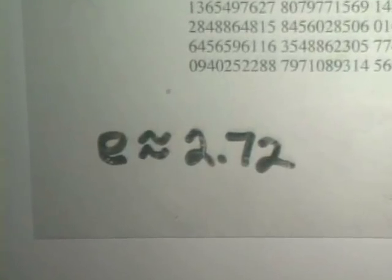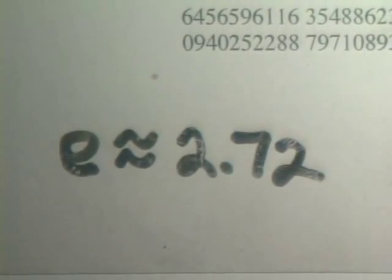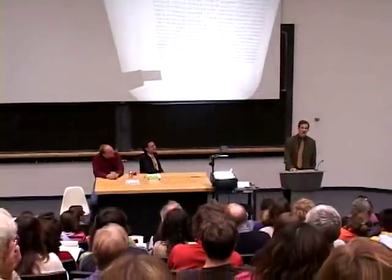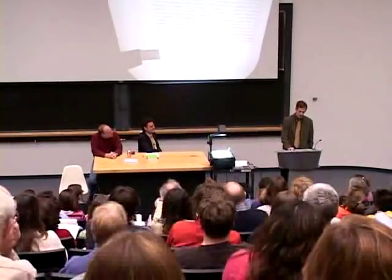Or should it be e? Pariah of the Renaissance, embarrassment to Euler, shunned by the neighboring numbers 2.7 and 2.8?